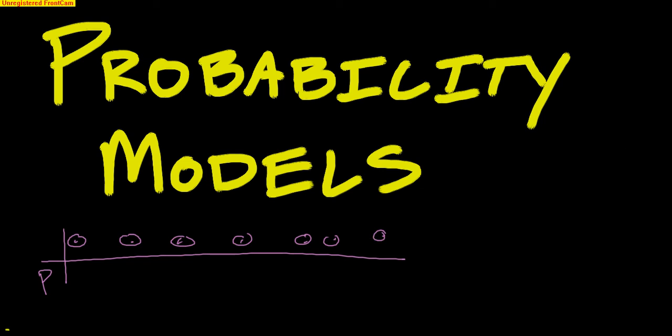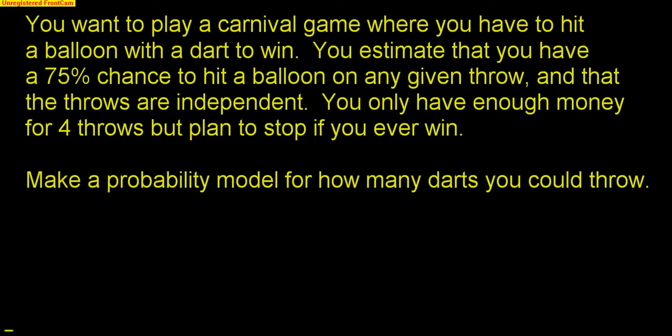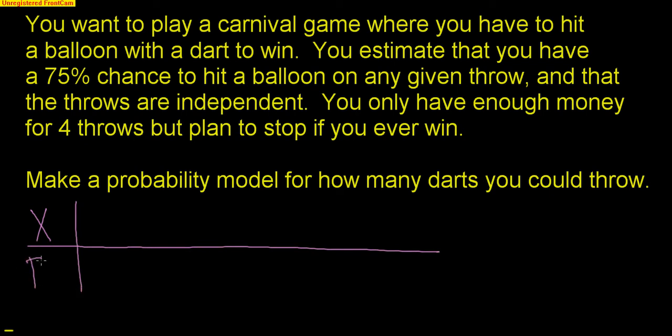Now how do you do that? You have to have a good understanding of probability. Let's look at this question. You want to play a carnival game where you have to hit a balloon with a dart to win. You estimate that you have a 75% chance to hit a balloon on any given throw, and the throws are independent — meaning you have a 75% chance on every throw, it doesn't get better or worse. You only have enough money for four throws, but plan to stop if you ever win. Make a probability model for how many darts you could throw. X is the value for how many darts I could throw, and I'm going to find the probability of each event.